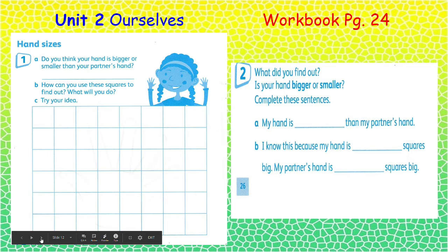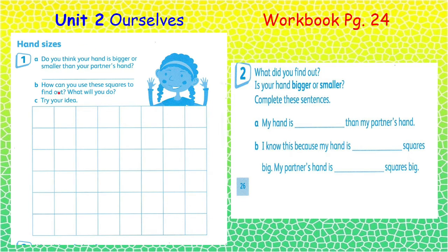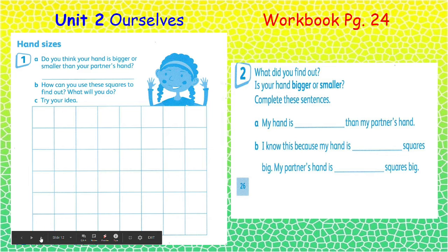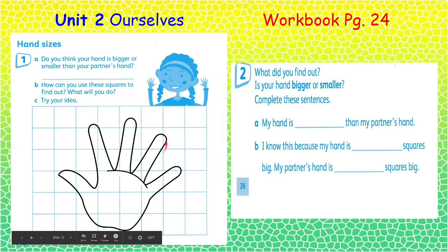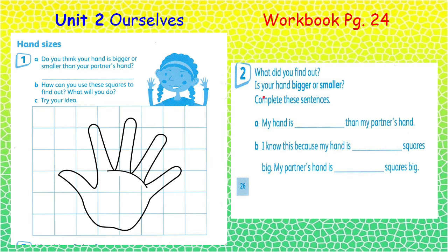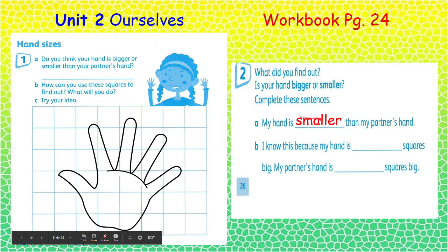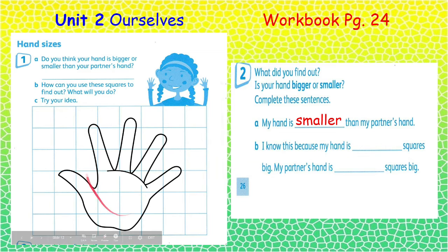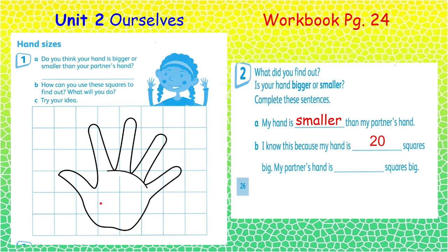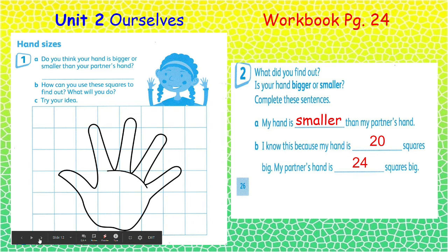All right, let's talk about hand sizes. We will find out if your hand is bigger or smaller than your partner's hand. You will put your hand on these squares, draw around it, and then count how many squares total your hand covers. Write whether your hand is bigger or smaller than your partner's hand. For example: my hand is smaller. I know this because my hand is 20 squares, and my partner's hand is 24 squares.